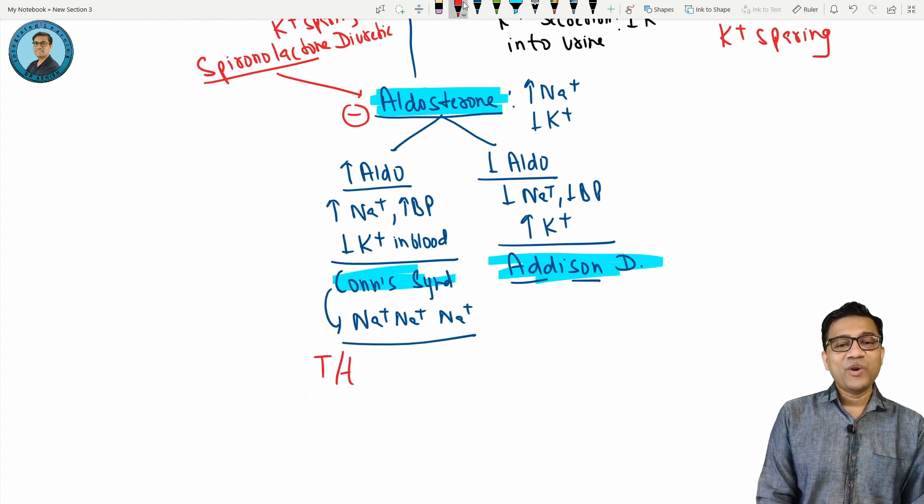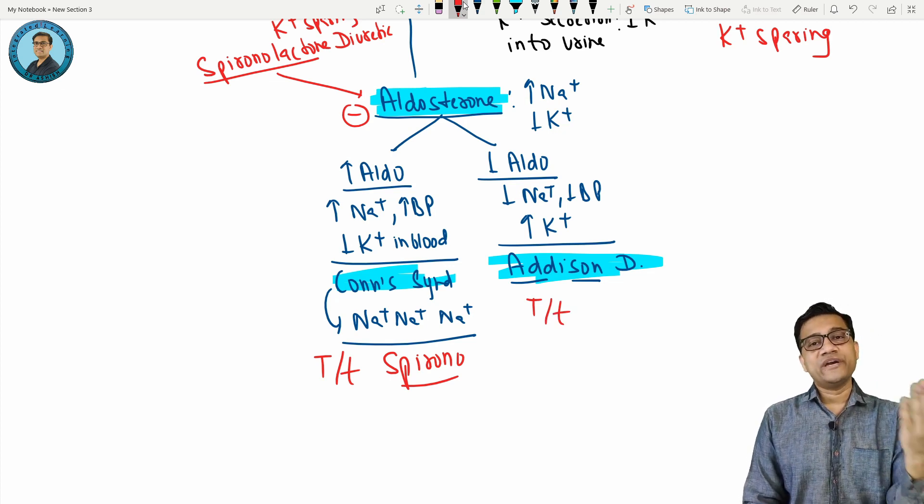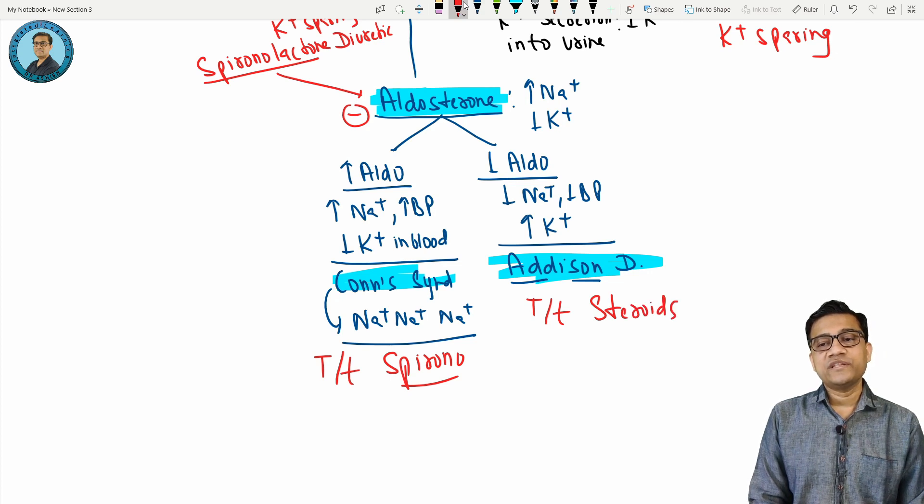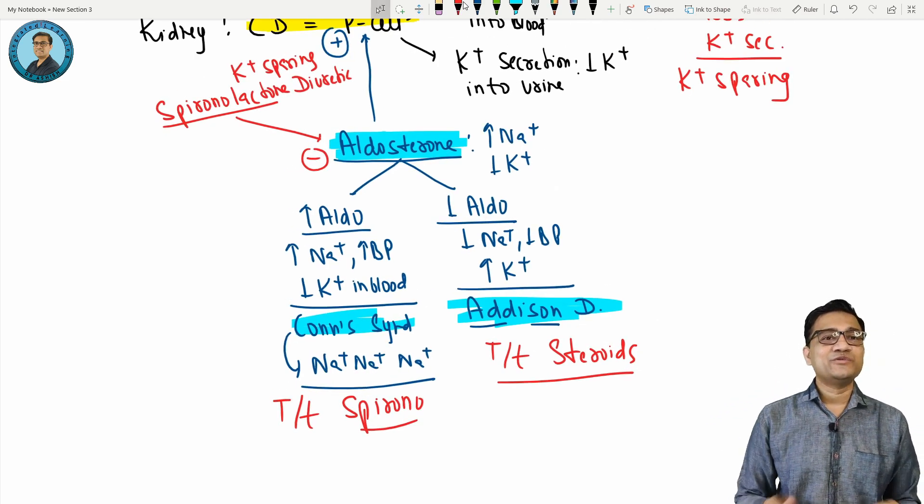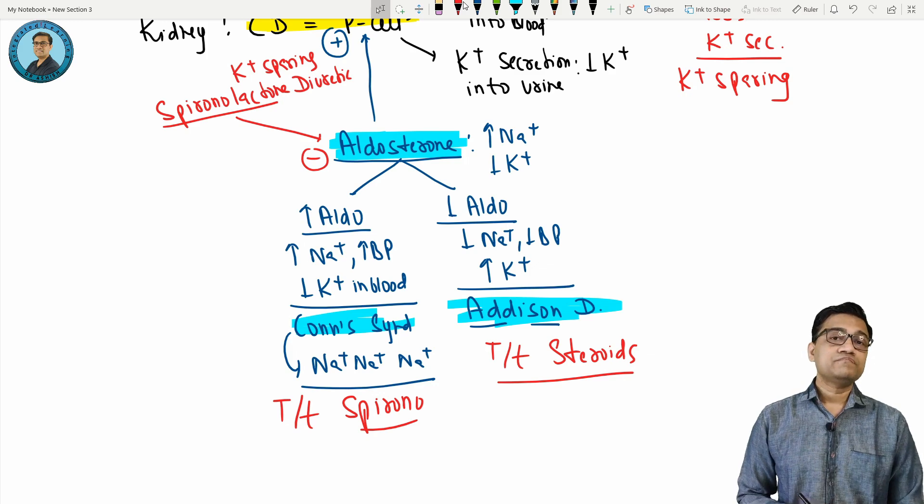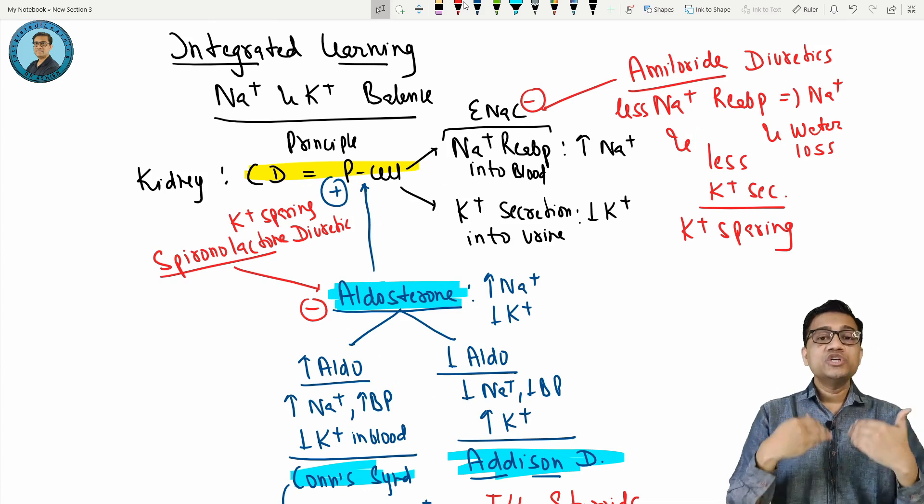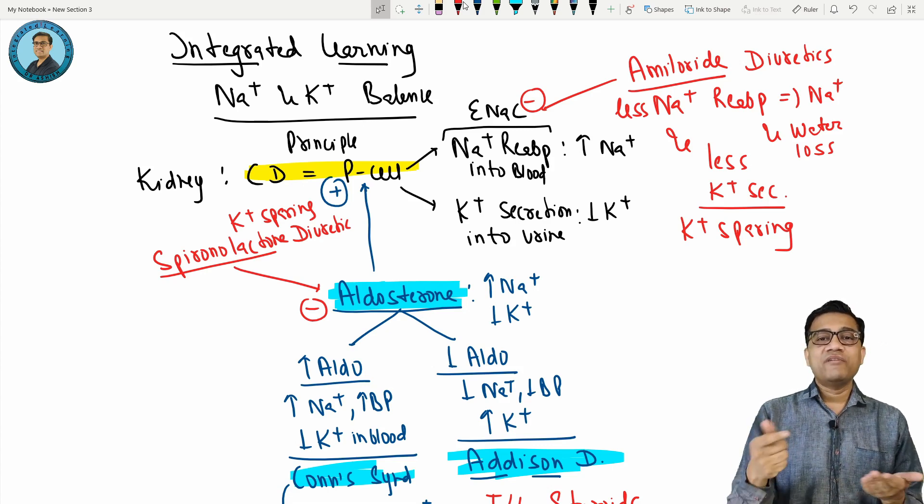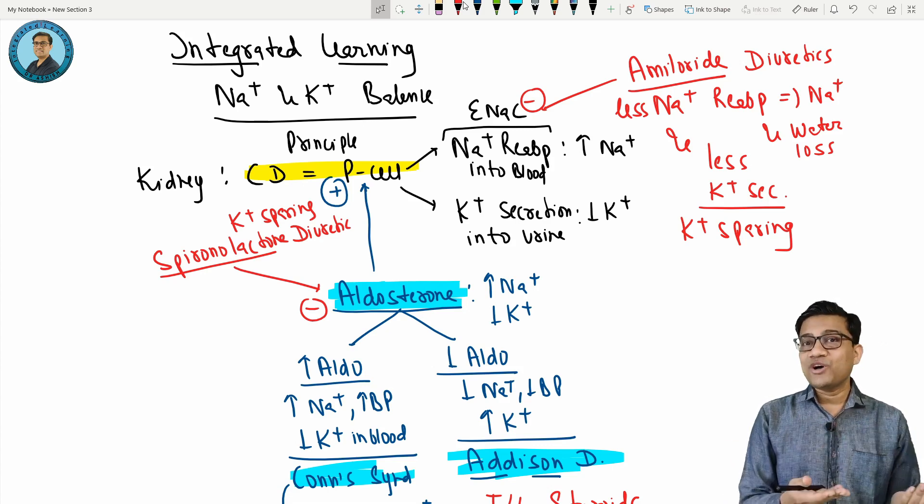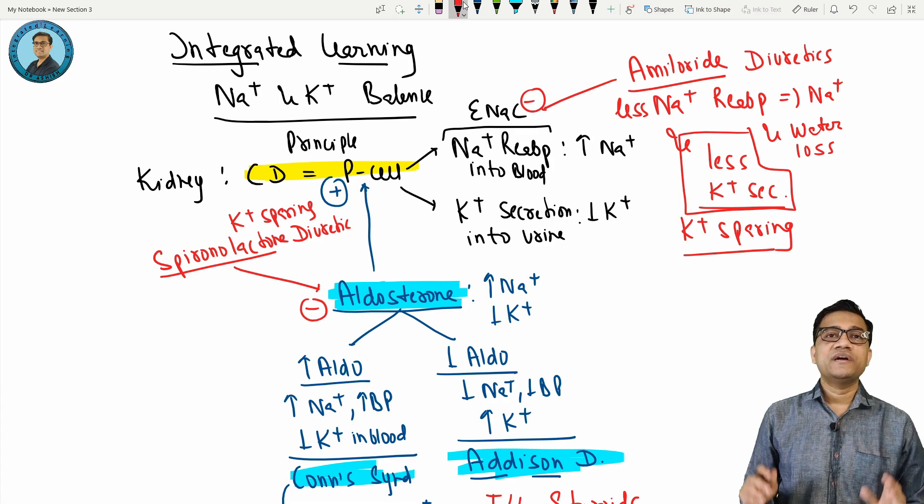Here for Addison's, treatment gives steroids. We will give steroids like glucocorticoids or aldosterone. Treatment is steroids. So now we learn the treatment also. Give steroid to correct the problem. Here you block the steroid, which is aldosterone - a steroid. So what is the summary? P cell increases sodium, decreases potassium. Aldosterone stimulates them. Who blocks them? Amiloride and spironolactone block the P cell via ENaC or aldosterone. That's why they cause sodium loss but not potassium loss, so they're called potassium sparing diuretics.